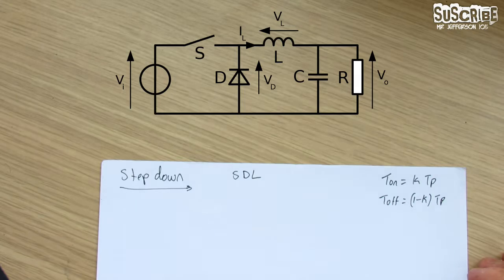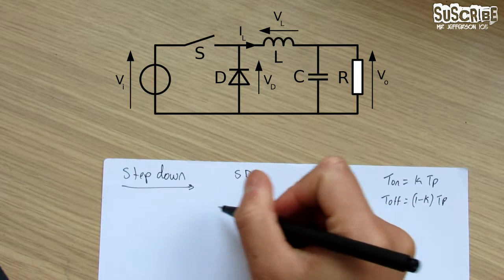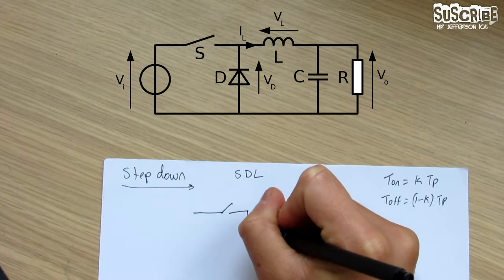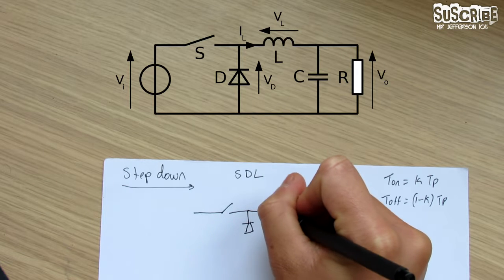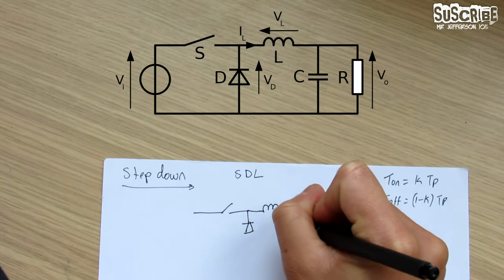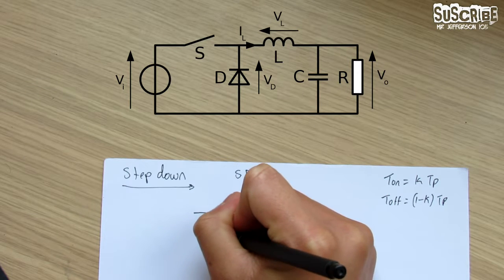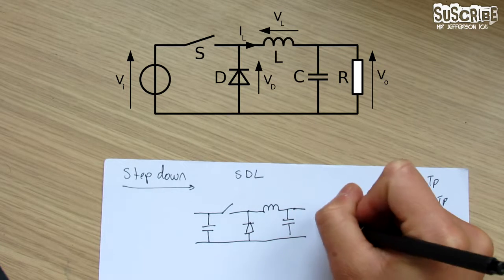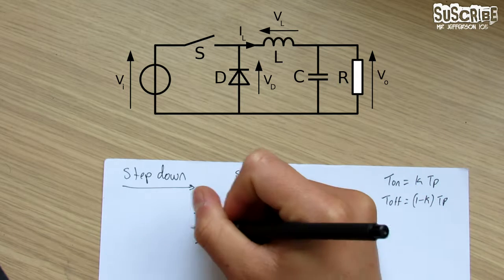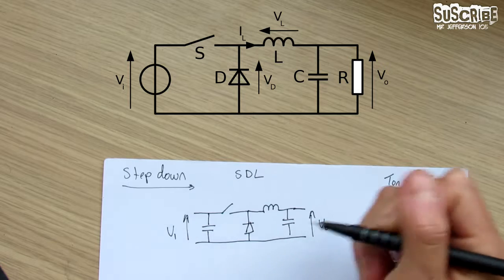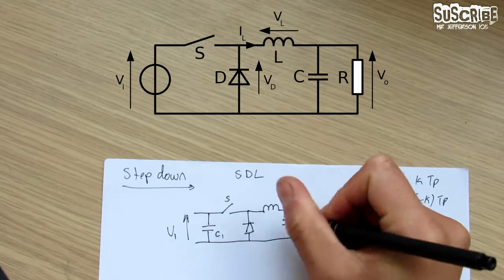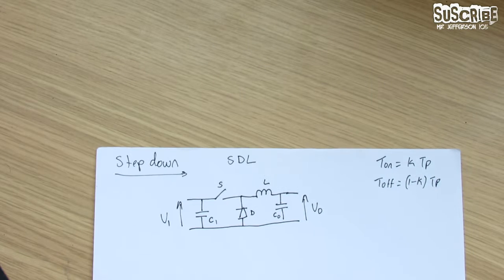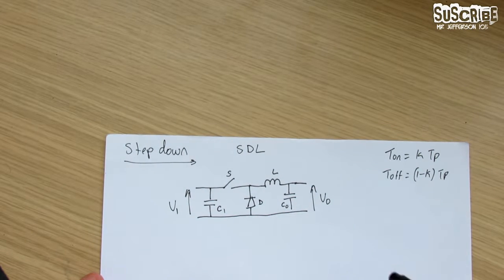The circuit diagram goes as follows: we have the switch, then we have the diode, and then we have the inductor. After the inductor we have a capacitor, and before the switch we also have another capacitor. We have V_out on the output side and V_in on the input side. This is S, this is C_in, this is C_out, this is the diode, and this is the inductor.